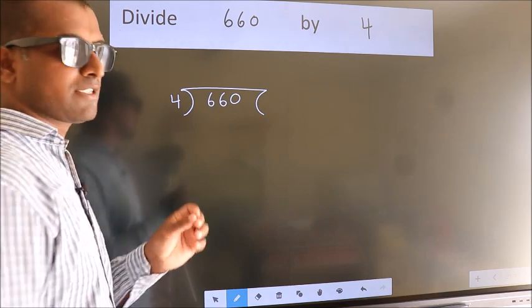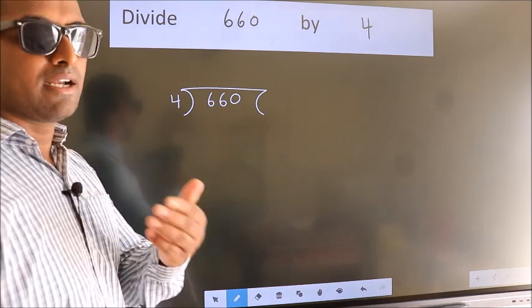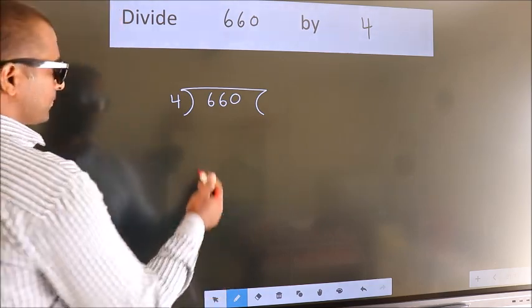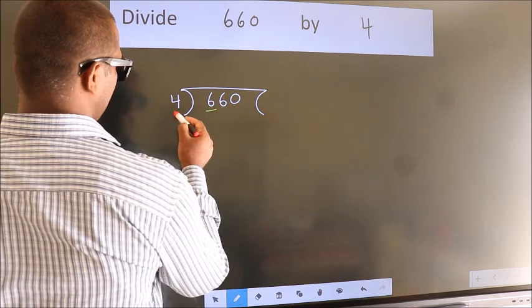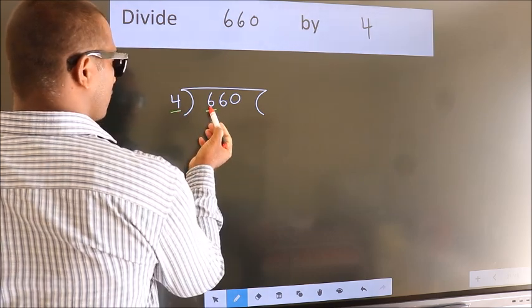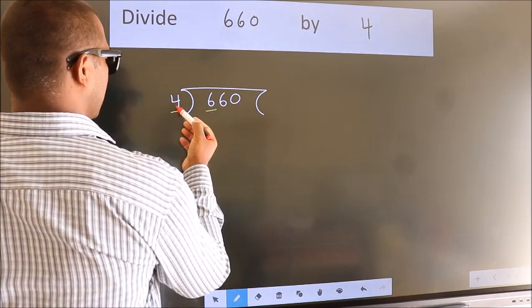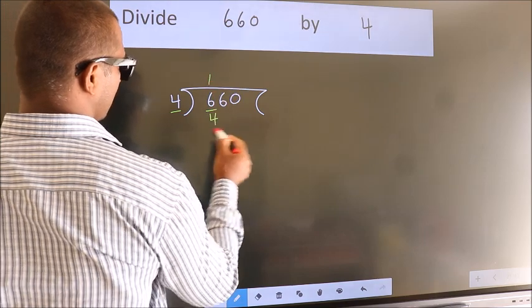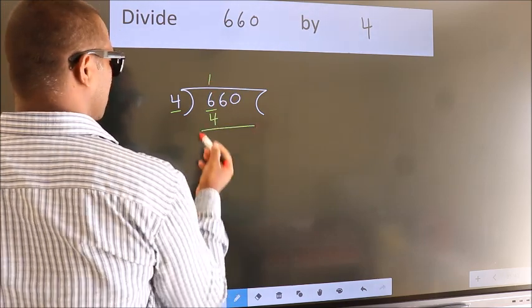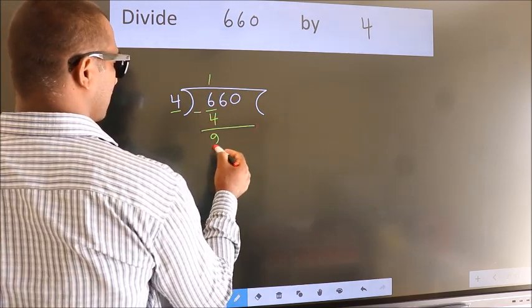This is your step 1. Next, here we have 6, here 4. A number close to 6 in 4 table is 4 once, 4. Now, we should subtract. We get 2.